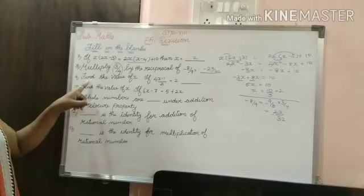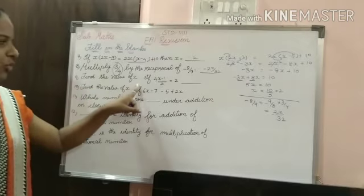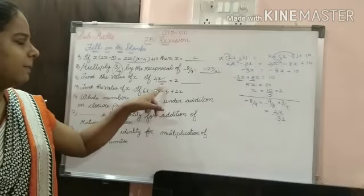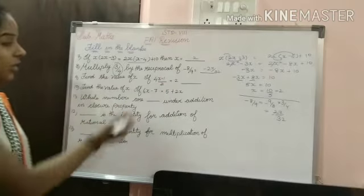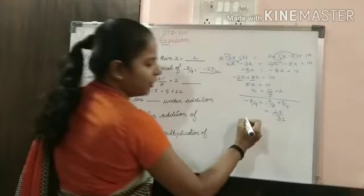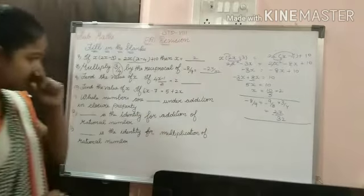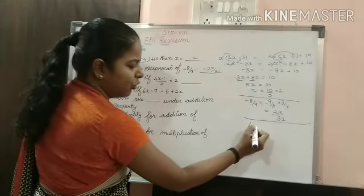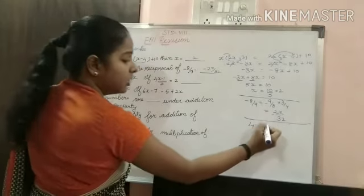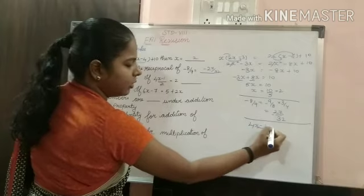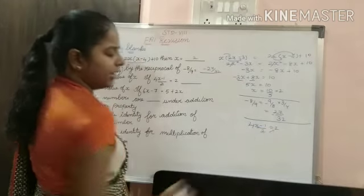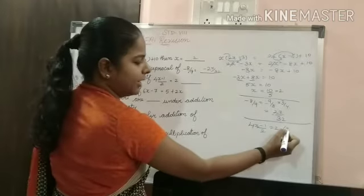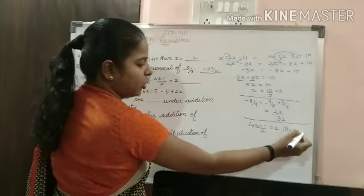The next question: find the value of x if 4x minus 1 by 2 is equal to 2. To solve this, you can multiply 2 on both sides by balancing. So multiplying both sides by 2.